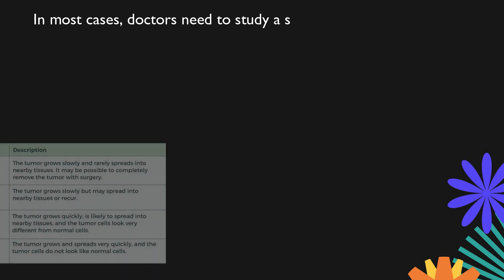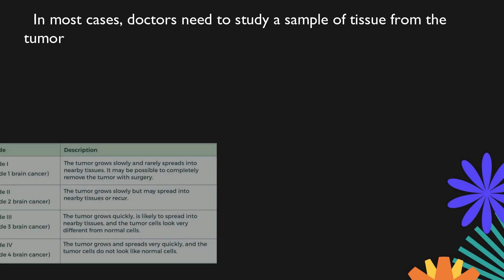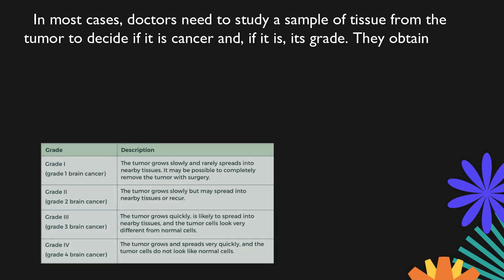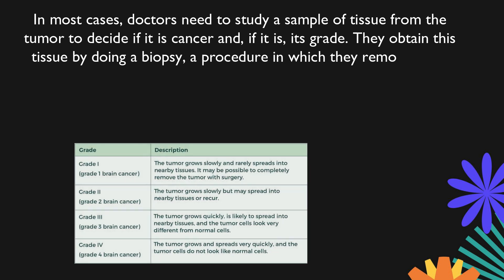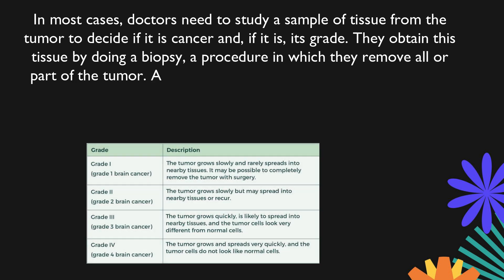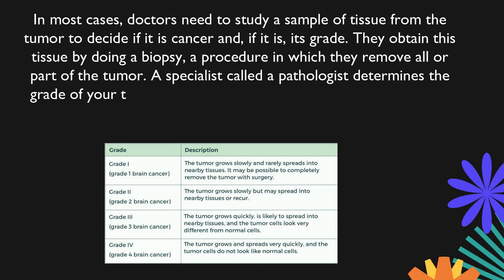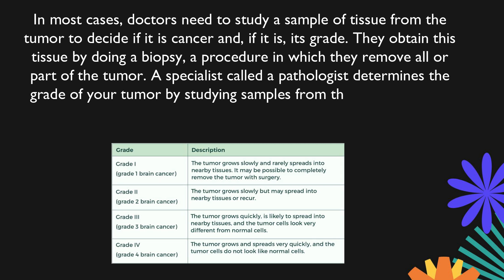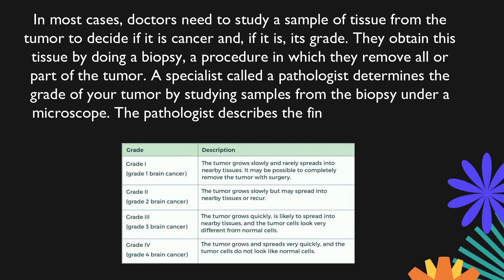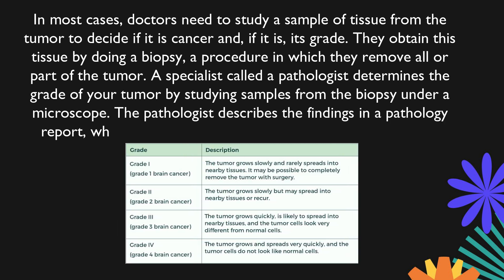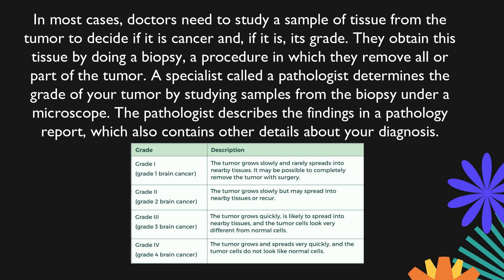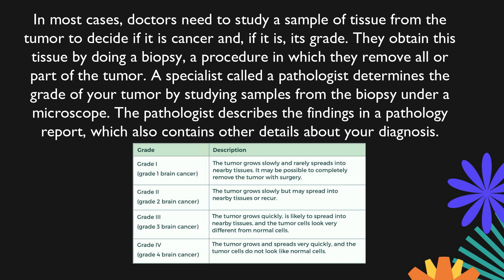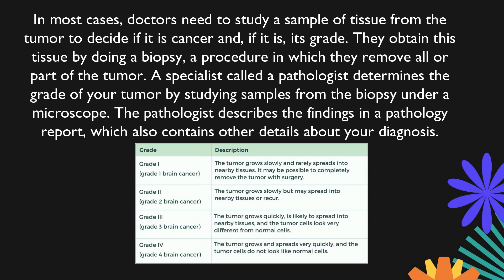In most cases, doctors need to study a sample of tissue from the tumor to decide if it is cancer and, if it is, its grade. They obtain this tissue by doing a biopsy, a procedure in which they remove all or part of the tumor. A specialist called a pathologist determines the grade of your tumor by studying samples from the biopsy under a microscope.